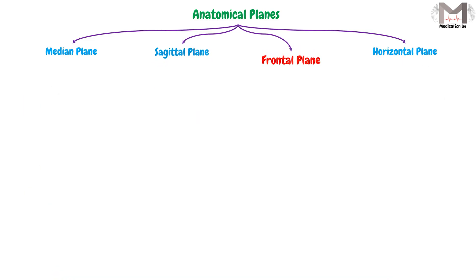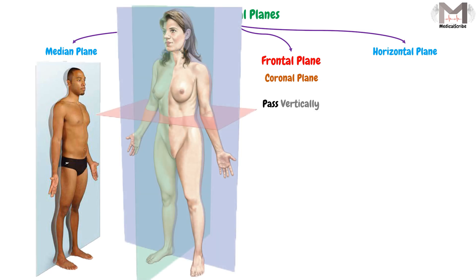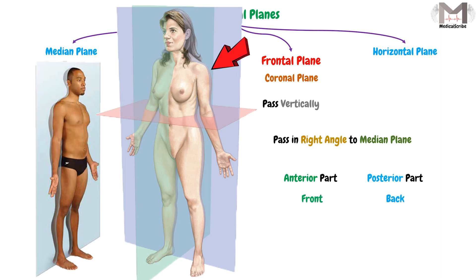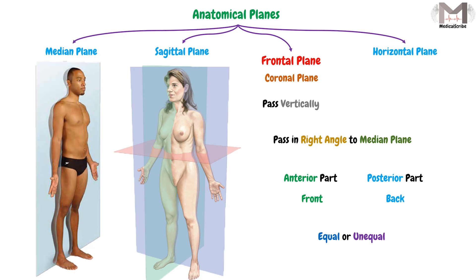The third plane is the frontal or the coronal plane — both are the same. This plane passes vertically through the body, but it will pass at a right angle to the median plane. That means it will divide the body into an anterior part and a posterior part, or a front and a back. These two parts may be equal in size or unequal, depending on whether it passes through the middle of the body or not.